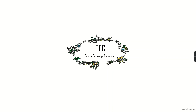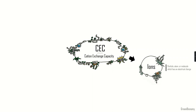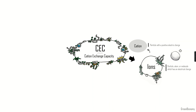CEC — cation exchange capacity — is a fancy and a bit scary word. The first thing we need to understand is what ions are. An ion is a particle, atom, or molecule which has an electrical charge. This charge can be positive — when it's positive we have a cation, a particle with a positive electric charge — and if it's negative we have an anion, a particle with a negative electric charge.